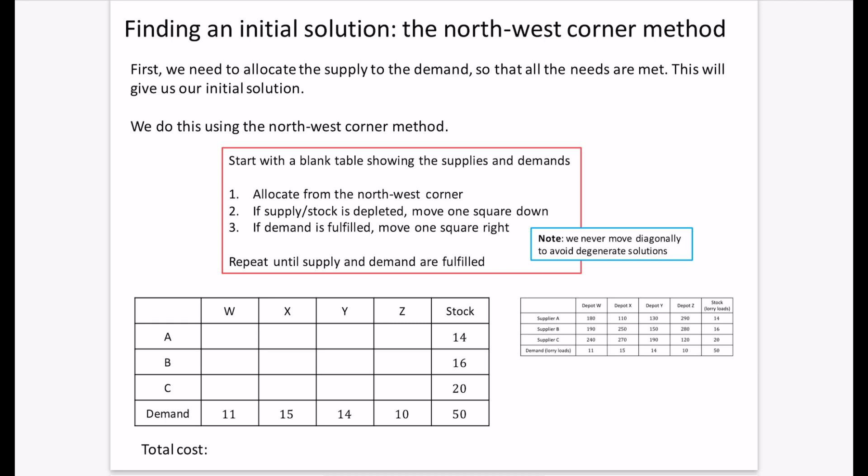That's everything you need about the Northwest Corner Method, which is about filling in the table for exercise 1A. In the next video, we're going to have a quick look at what happens if we have an unbalanced problem.